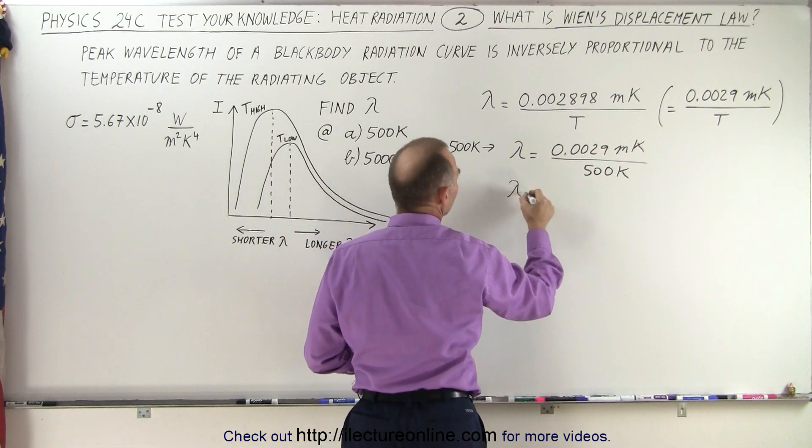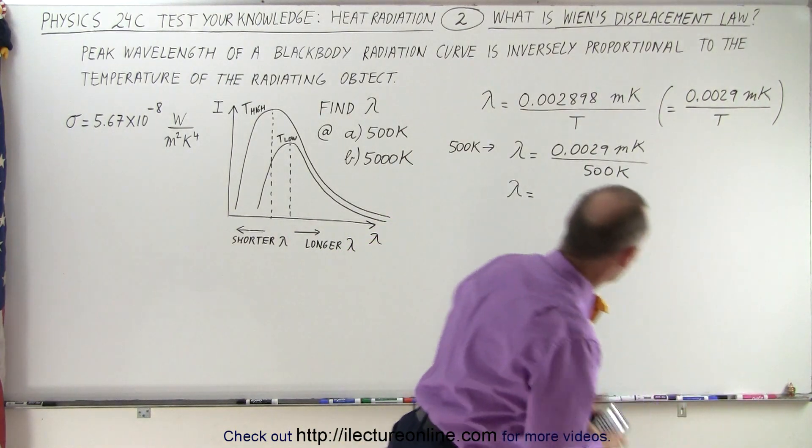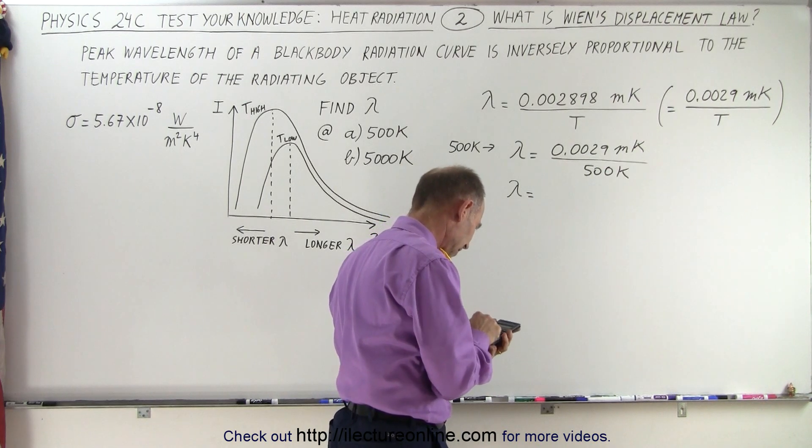And so that would be lambda equal to—let's just get it calculated to make sure we get the right decimal point—0.0029 divided by 500.